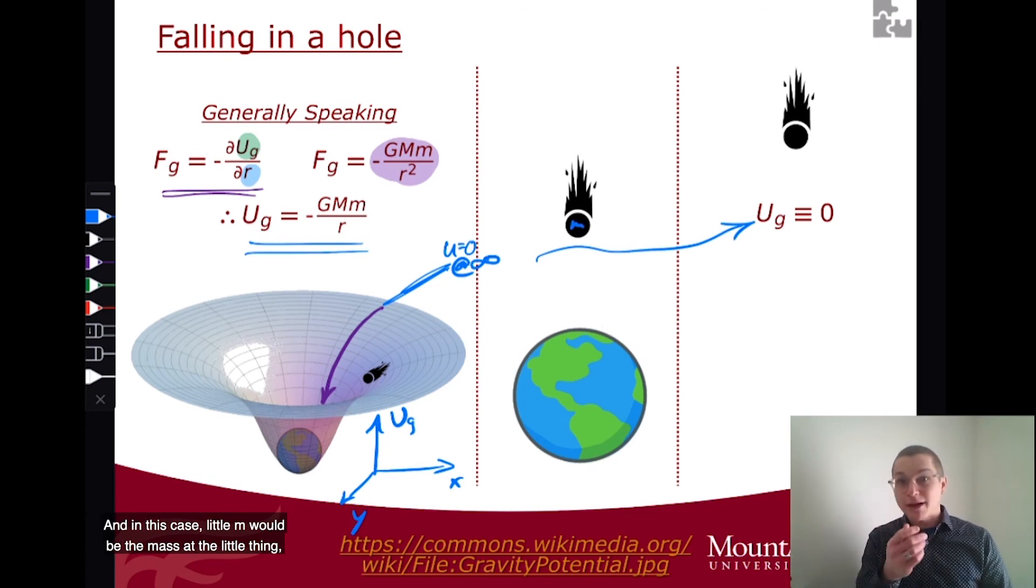And in this case, little m would be the mass of the little thing, big M would be the mass of the big thing. And that G is a constant that gives us the strength of that force.